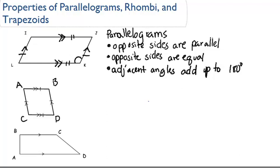And the adjacent angles, so like this angle and this angle, angle K and angle J, they would add up to 180 degrees. Angle I and angle L would also add up to 180 degrees.